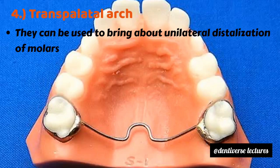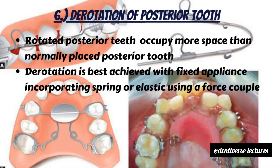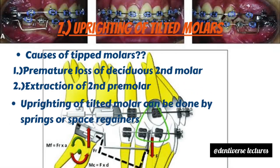The sixth method of space gaining is derotation of posterior teeth. Rotated posterior teeth occupy more space than normal, so derotation of these teeth provides some amount of space. It is best achieved with fixed appliance incorporating springs or elastics using a force couple.